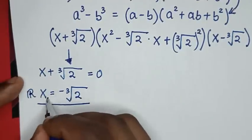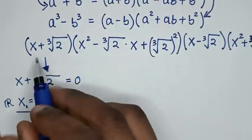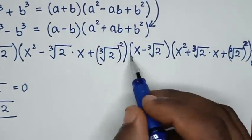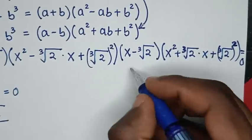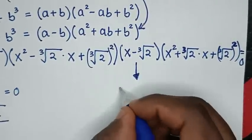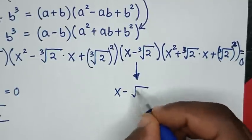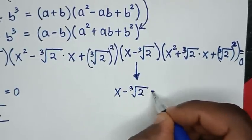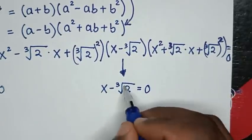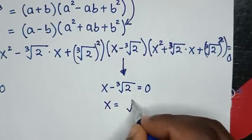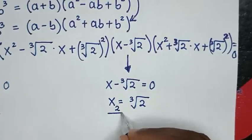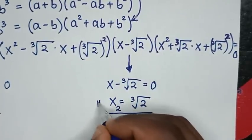So this is the first value of x, and this is a linear equation. Also, the second factor is a linear equation, and it will also give a real solution. From here, x − ∛2 = 0. We take ∛2 to the other side, so x is equal to ∛2. This is the second real value of x.